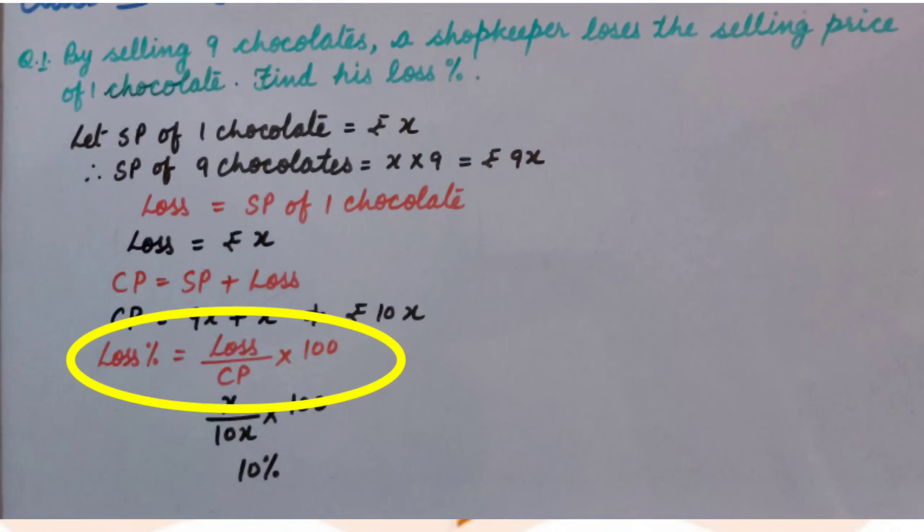Loss percent equal to loss upon CP multiplied by 100. Inserting the values we get, he loses 10%.